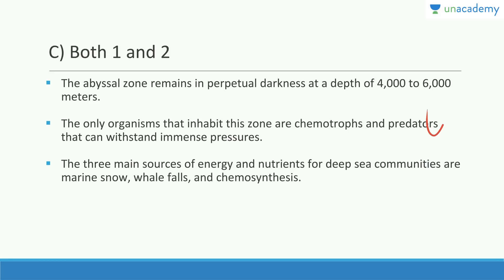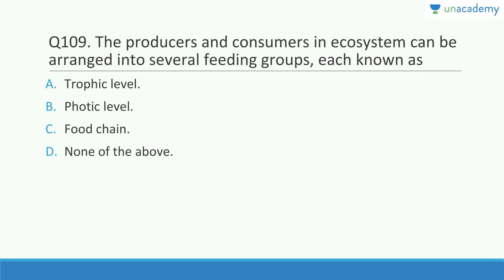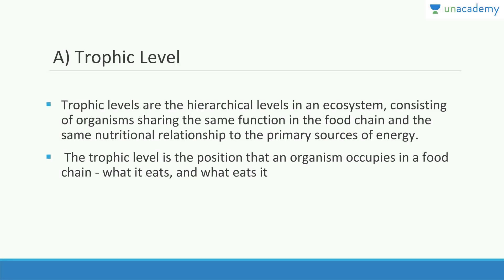The three main sources of energy and nutrients in the abyssal zone include marine snow, whale falls, and chemosynthesis. The producers and consumers in an ecosystem can be arranged into several feeding groups, each known as a trophic level. Trophic levels are the hierarchical levels in an ecosystem consisting of organisms sharing the same function in the food chain and the same nutritional relationship to the primary source of energy.